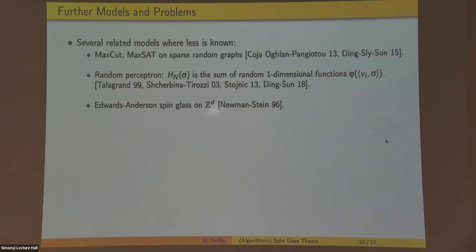Okay, let me finish by just mentioning a few other problems in this kind of corner of the world. So there are quite a few problems that are supposed to behave similarly where some things are known, but less is known. So one is problems like max cut and max sat on sparse random graphs. So I mentioned that if you have an Erdős-Rényi graph with diverging average degree, you'll have a similar behavior in some sense. But if you have, say, a three regular graph, then it's not known. Another model that is very related is the random perceptron model where your Hamiltonian is a sum of random one dimensional functions. And there's also, of course, the lattice model. This is called the Edwards-Anderson model and the limit is known here.